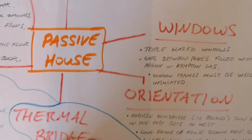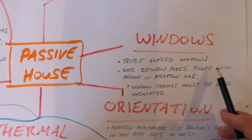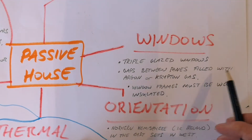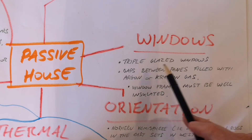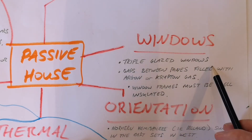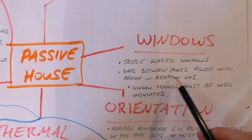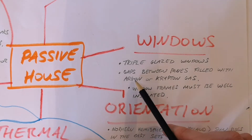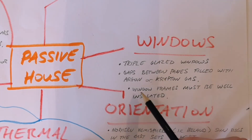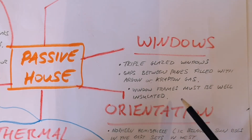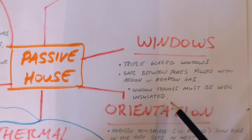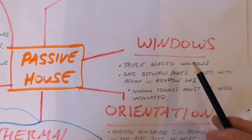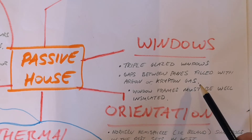Windows are a massive part of a passive house but they're expensive. They need to be triple glazed. The gaps between the three panes are filled with an argon or krypton gas, and the window frames also need to be really well insulated. So you're spending a lot of money on windows for a passive house design.